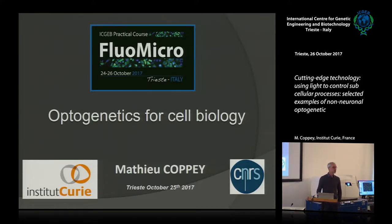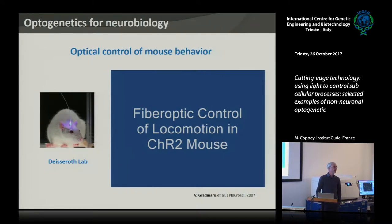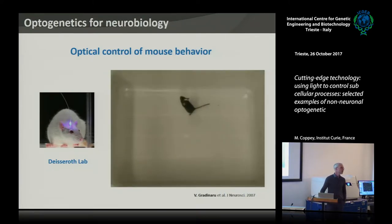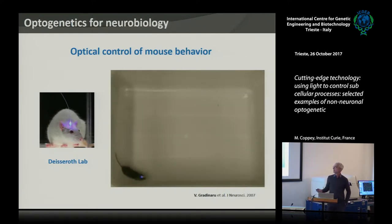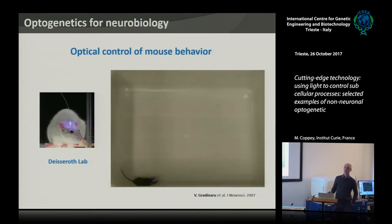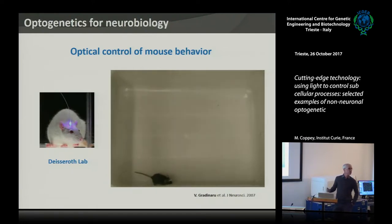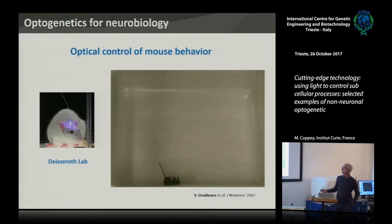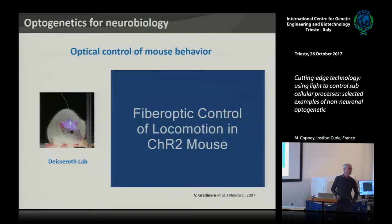To introduce optogenetics: actually at the beginning, it was a term coming from neurobiology. It was called optogenetics because it was a way to activate neurons with light. Here is one of the famous researchers who developed optogenetics. What you see is a little mouse with a little LED on its head. When the LED is off, the mouse wanders around normally, and as soon as you turn on the LED, the mouse starts to walk around — you can really remote control the mouse.